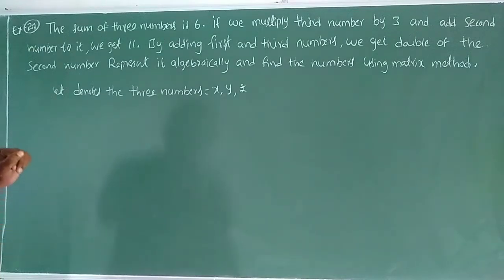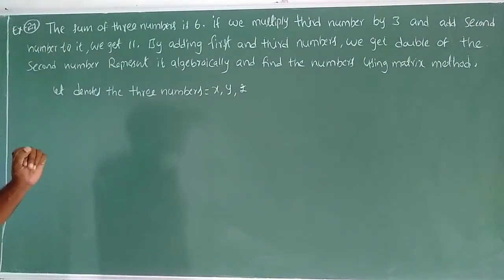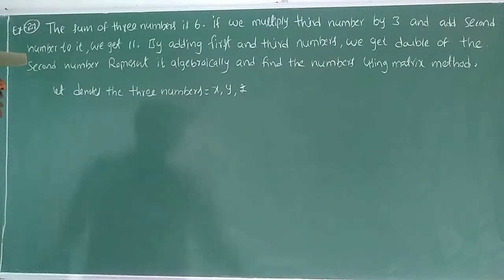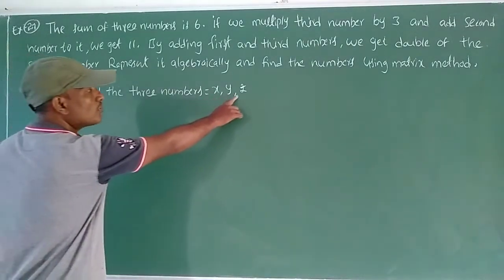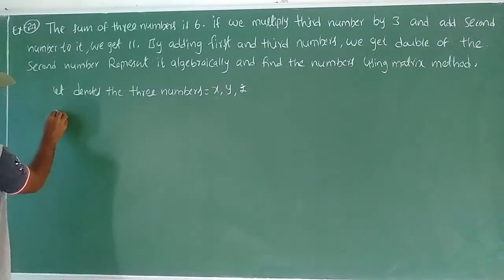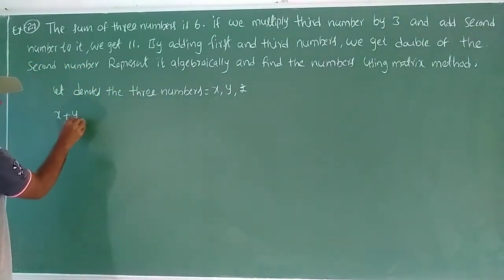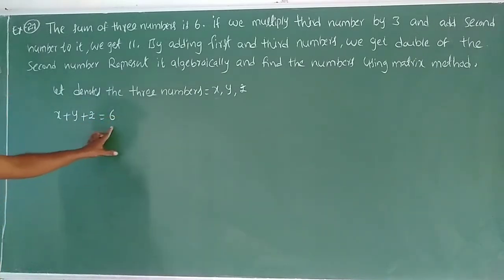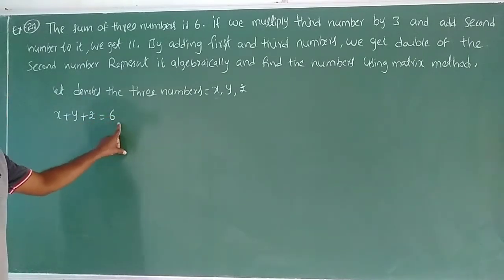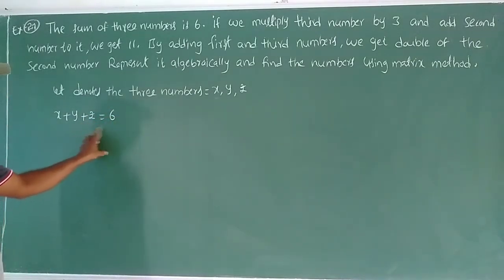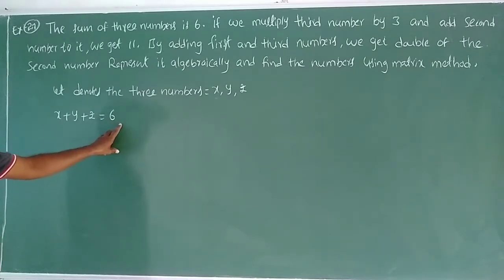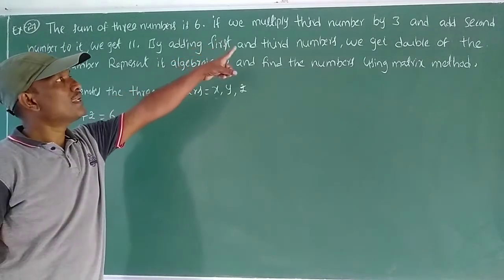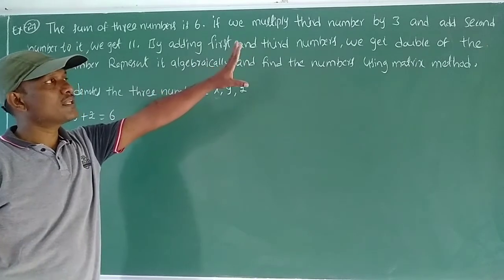Equation form: the sum of three numbers is 6. Sum means addition. So x plus y plus z equal to 6. This is equation number 1.